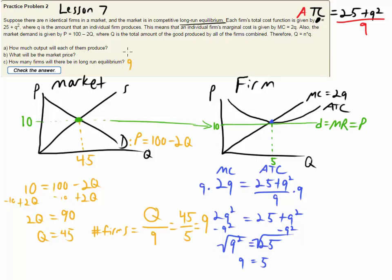So there will be 9 firms, the market price is 10 and each firm is producing 5 units of output. The other two practice problems are basically the same solution method. I hope this helps. Let me know if you have any questions.